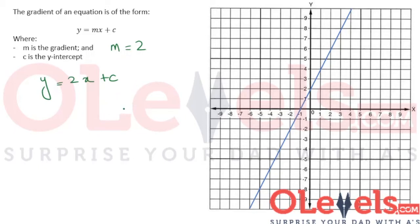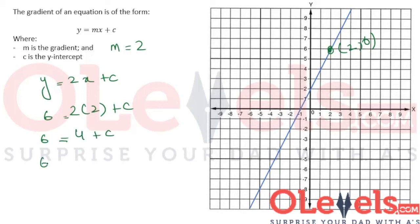To determine c, we can simply use any point on this line. I am going to use this point right over here, the point (2, 6). Instead of x, I will put 2 and instead of y, I will put 6. 2 into 2 is 4, so this becomes 6 is equal to 4 plus c. 6 minus 4 is equal to c — all we did was move the 4 to this side — and finally, 2 is equal to c.